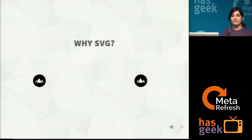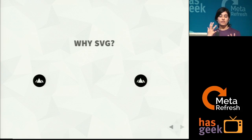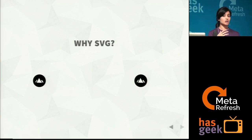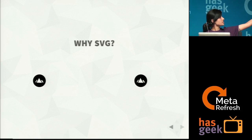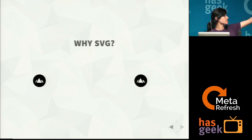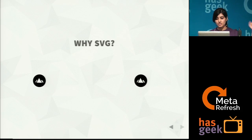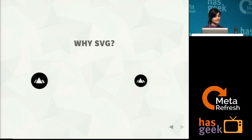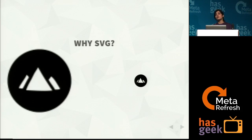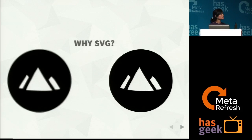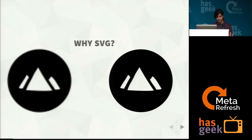SVG is graphics that scales well across multiple screens without any loss of fidelity. Here I have two versions — one is a PNG version which is a bitmap, and I have an SVG. When I scale it, as you can see, the image gets distorted. But with SVG, there is no loss of fidelity and it works well across multiple screens.